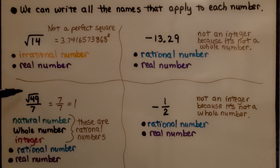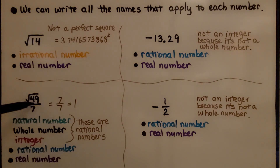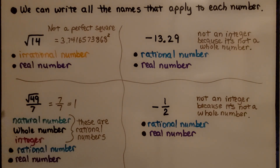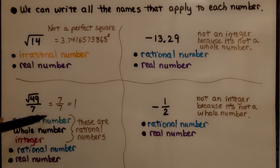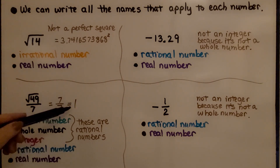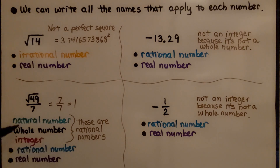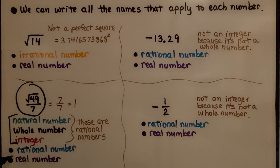Here we've got the quotient of the square root of 49 and 7 — that's how you would read that fraction, since fractions are like little division problems. The square root of 49 is 7, that's 7 times 7, and it's over 7. Same numerator and denominator, that's equal to 1. So not only is this a natural number, it's a whole number and an integer. These are all rational numbers, so we can say this is a rational number and a real number.